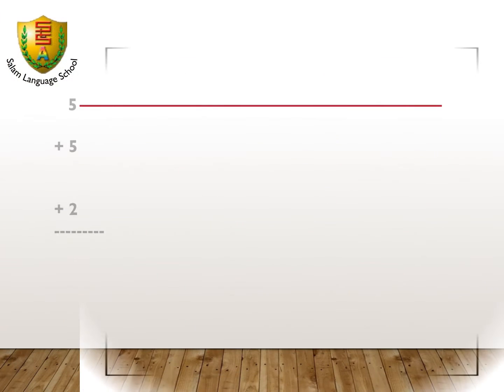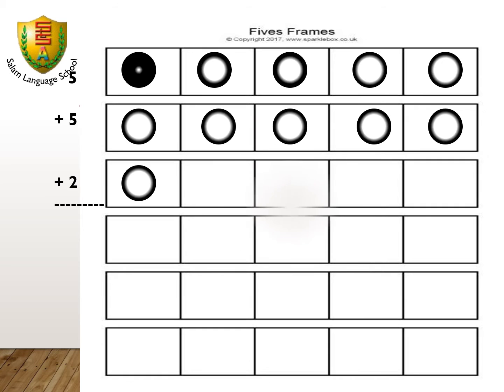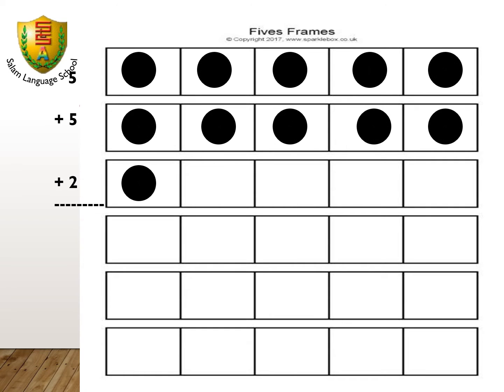It's 5-frame time. We put a new dot in a new 5-frame. It's number 12. To show number 12, we use 2 completed 5-frames and 2 dots in a third new 5-frame.